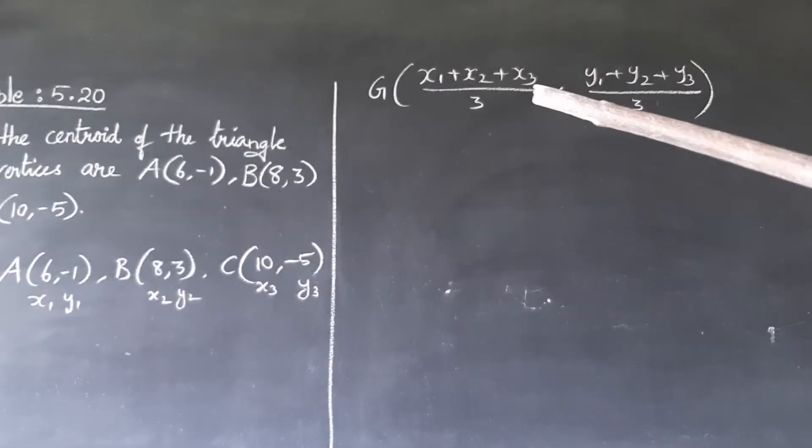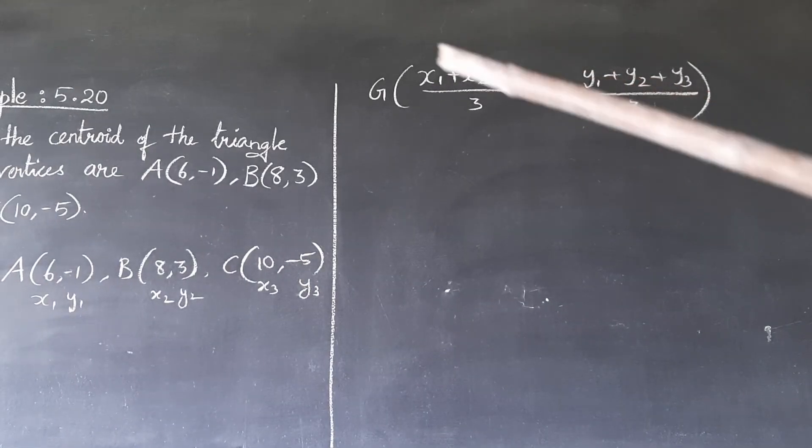G of (x₁ + x₂ + x₃)/3, (y₁ + y₂ + y₃)/3. Let's substitute the x₁, x₂, x₃ and y₁, y₂, y₃ values in the formula.